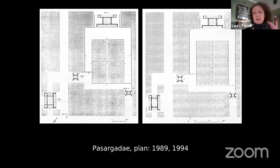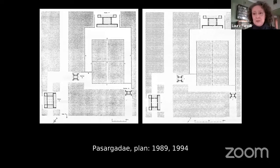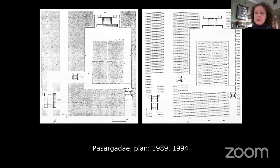As architectural historians in the 1970s looked for a definition of Islamic gardens, the closest they could find was the chapter on gardens in Pope and Ackerman's Survey — and that is how the narrative was transferred from Persian gardens to all Islamic gardens.